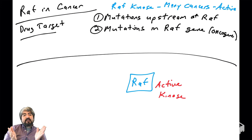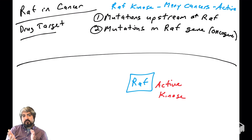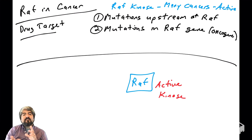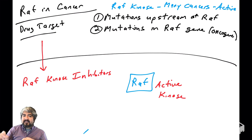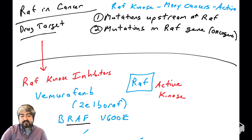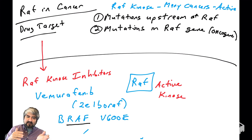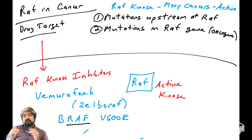Now let's talk about targeting RAF. If you can design a drug to target RAF — since RAF's kinase is always active in many human cancers, always phosphorylating substrates and driving cells into S phase — what kind of drug would inhibit a kinase? That's right: a kinase inhibitor. There are drugs on the market that are kinase inhibitors that bind to the ATP binding pocket of RAF and inhibit RAF's ability to bind ATP and phosphorylate substrates. One example is Vemurafenib — the '-nib' suffix tells you it is a kinase inhibitor.